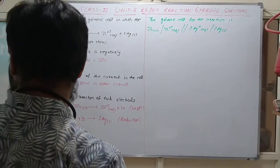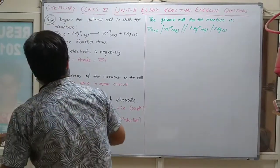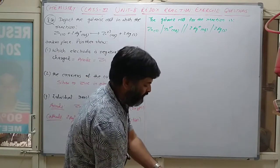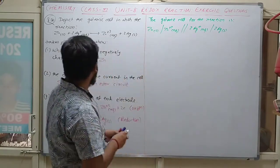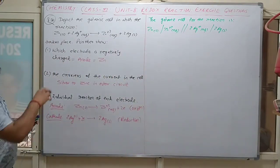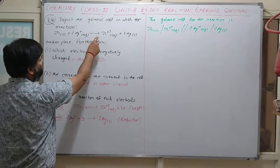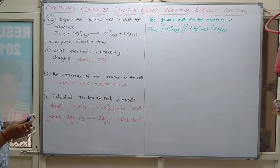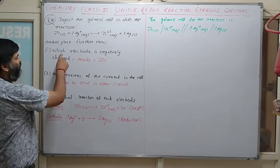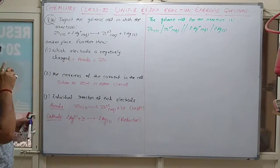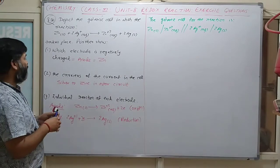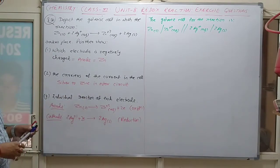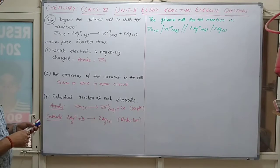Question 8.30: Depict the galvanic cell in which the reaction Zn + 2Ag⁺ → Zn²⁺ + 2Ag takes place. You need to identify which electrode is negatively charged, the feel carriers of the current in the cell, and the individual reaction at each electrode.